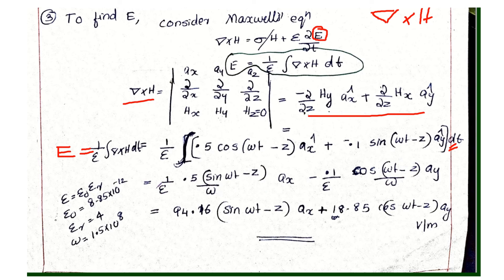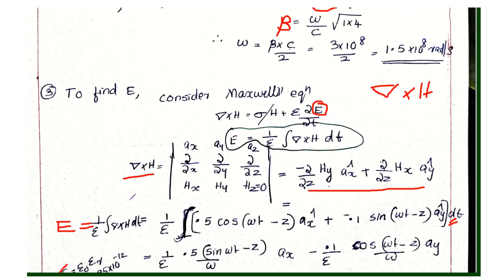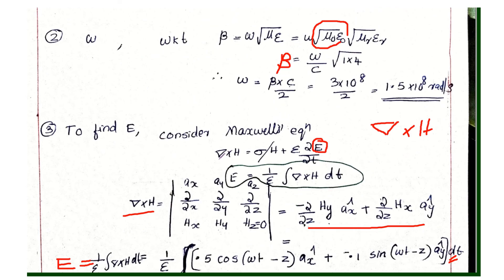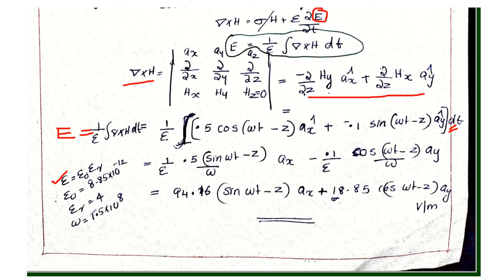Substituting the values: epsilon is equal to epsilon 0 into epsilon r, where epsilon 0 is 8.85 into 10 raised to minus 12, epsilon r is 4, and omega value is 1.5 into 10 raised to 8. We get E equal to 94.16 sin omega t minus z into ax. The E terms give 18.85 cos omega t minus az into ay. Thank you.